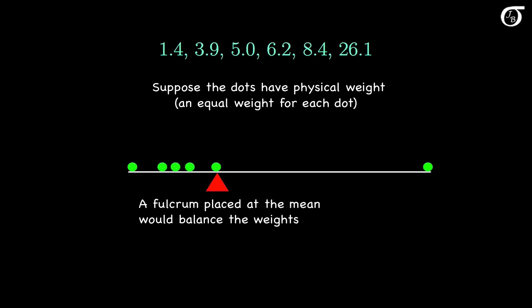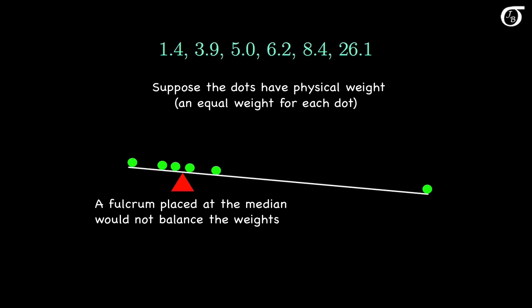The mean represents the balance point. That can sometimes help us visualize where the mean might be on a plot. If we shifted the fulcrum over and placed it at the median, then the weights wouldn't balance and the board would tip. A fulcrum placed at the mean would balance the weights, and a fulcrum placed anywhere else and the board would tip.